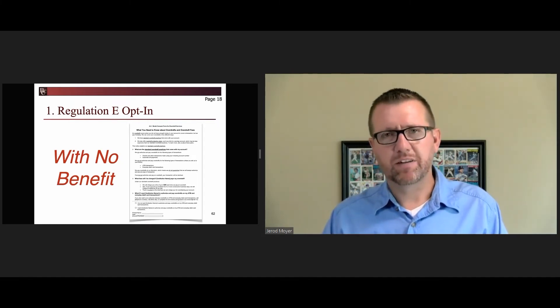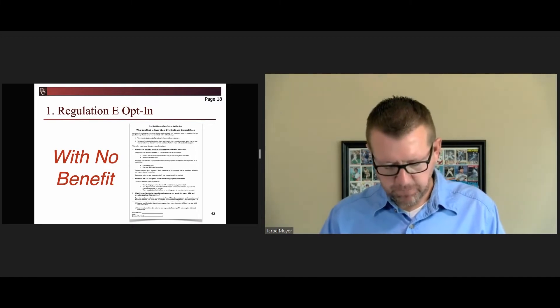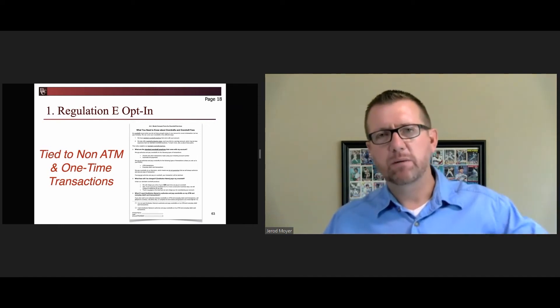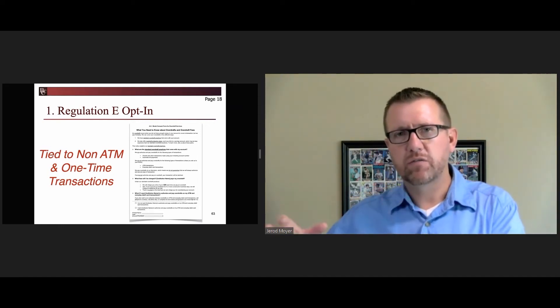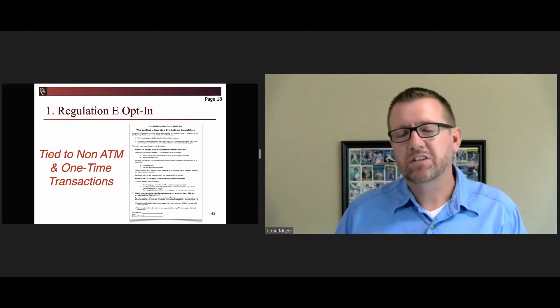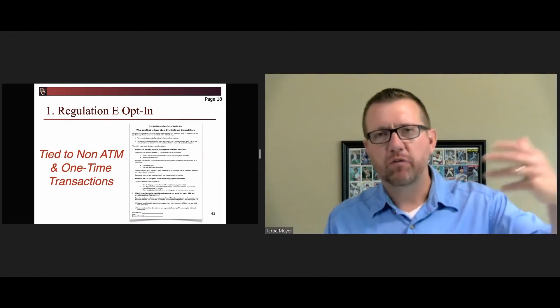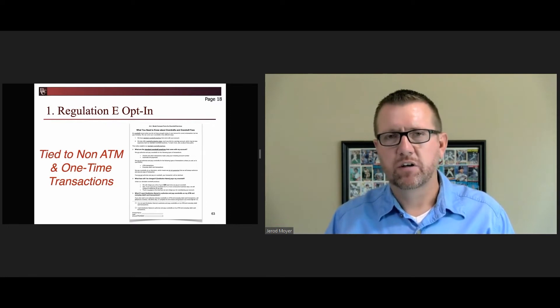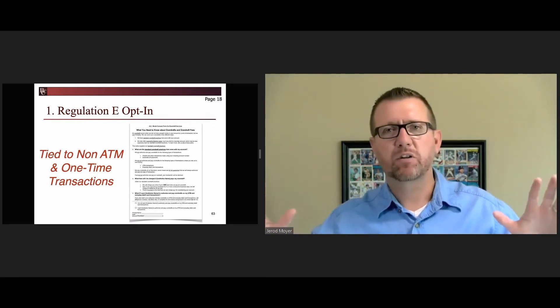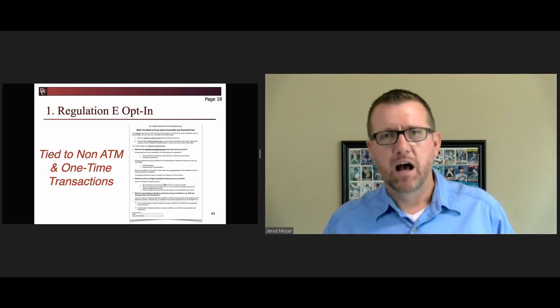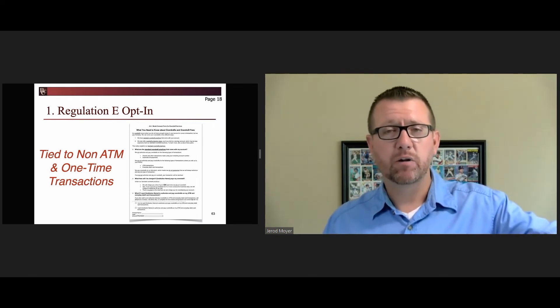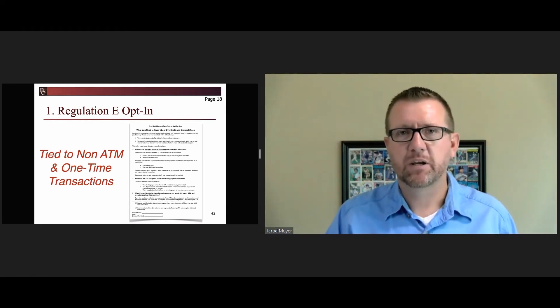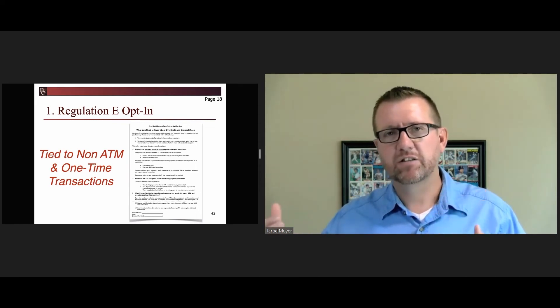So make certain there's a benefit that they get something over and above you just being able to charge them. Letter B is a reminder: you cannot tie the decision to opt in or not opt into one-time debit and ATM transactions to your overdraft services for checks and ACHs. In other words, if I don't opt in so that you can charge me for one-time debit and ATM transactions, then you can't say, well, we won't offer you any overdraft services for checks and ACHs. They have to be talked about separately. I need to be able to say I want in or out on one-time debit and ATM transactions independently from whether I want in or out on checks or ACHs.